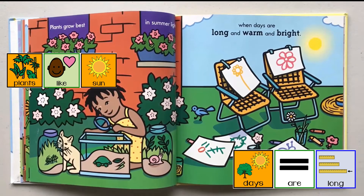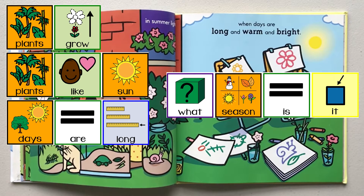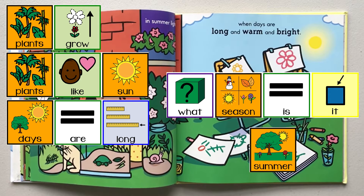Look, the girl caught a grasshopper, turtle, and a snail. Plants grow. Plants like sun. Days are long. What season is it? Summer!